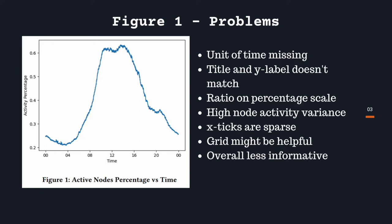So let's dive into the visualization. The first plot in this paper looks like this. This is off-putting in many ways, such as the time axis is missing the unit. For instance, in this case it represents hours but it doesn't explicitly tell us the time is in hours. The title and the y-label don't match either. As you can see, the title says active nodes percentage versus time whereas the y-axis says activity percentage.